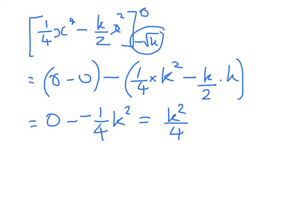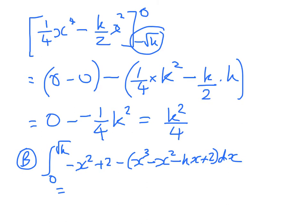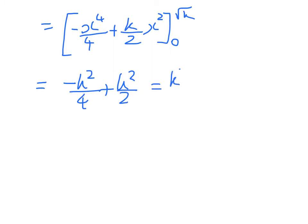Now we show area B is the same thing. For this one the parabola is the top function, so it's -x² + 2 minus the cubic. Simplifying, we get the integral of -x³ + kx dx, which gives us -x⁴/4 + (k/2)x² from 0 to √k, which is -k²/4 + k²/2, which again is k²/4 as required.